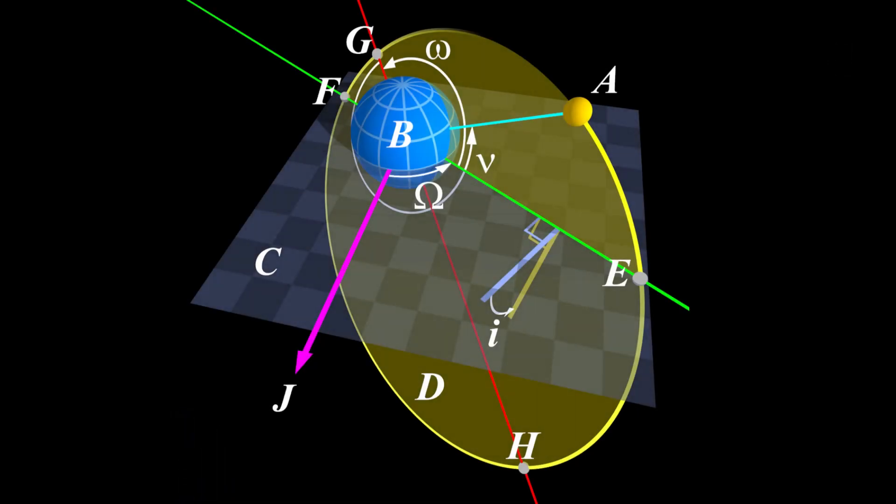The opposite happens during the quarter Moon, when the Earth, the Moon, and the Sun form a right angle. The difference between the full Moon and the quarter Moon can cause the Earth's rotation speed to vary by up to 4 milliseconds per day.